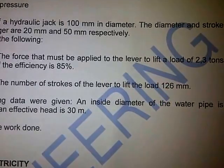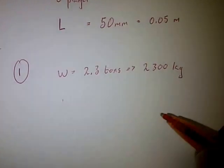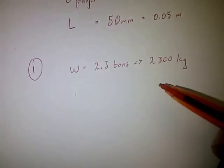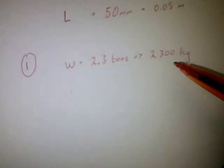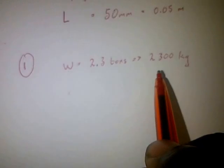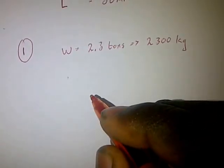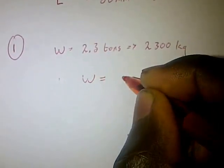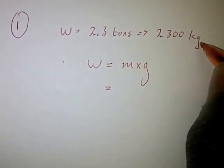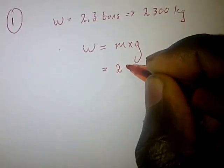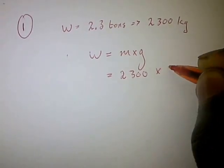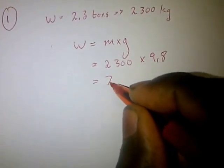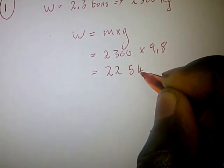2.3 tons converted into kilograms — multiplied by 1000 — gives us 2300 kg. Since we need a force, we use W equals mass multiplied by gravity. So we multiply 2300 kg by 9.8, which gives us 22,540 Newtons.